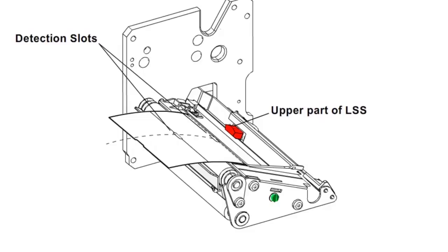If you are using irregularly shaped labels, align the LSS with the front tips of the labels.